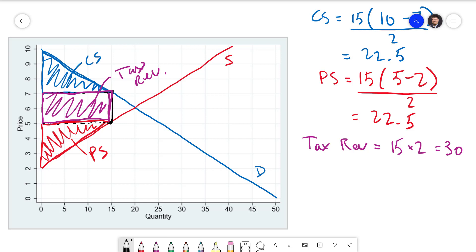This means our total surplus is the trapezoid that's formed by these three areas: the consumer surplus, the tax revenue, and the producer surplus. So our total surplus is going to be 22.5 plus 22.5 plus 30. That's going to be a total of 75.